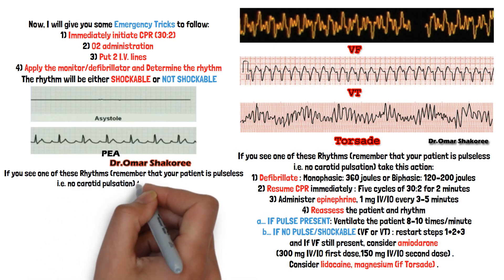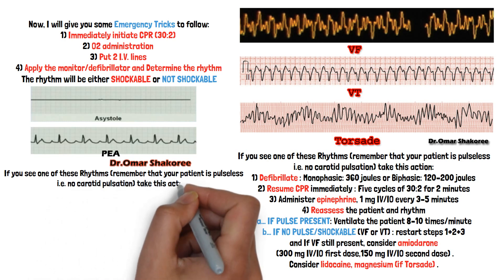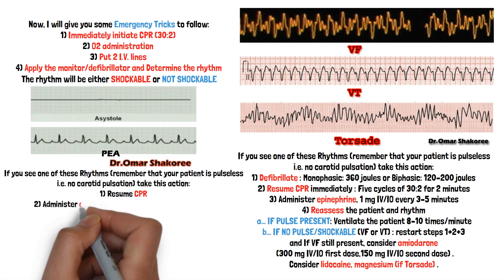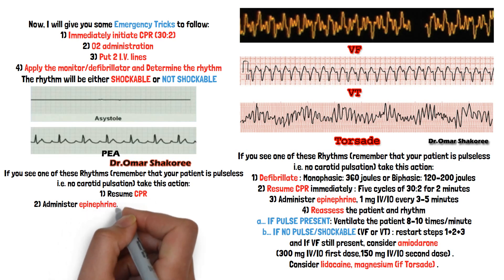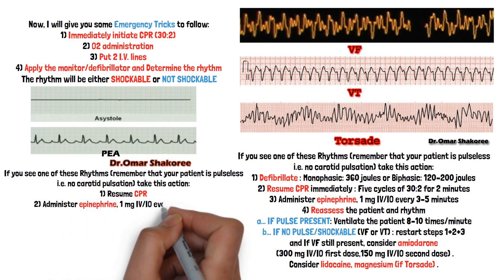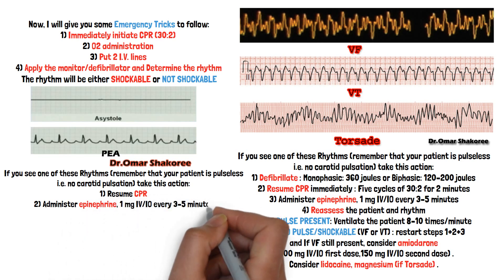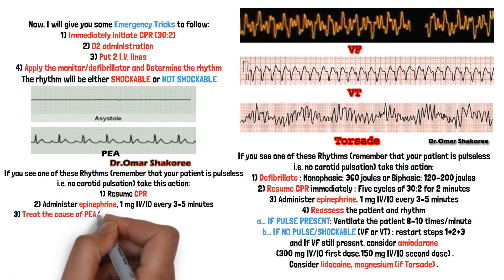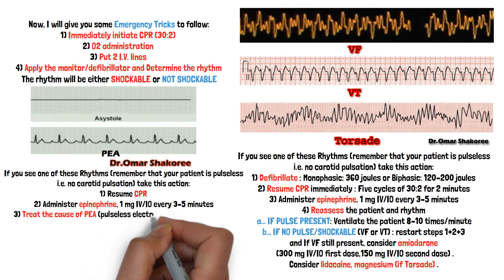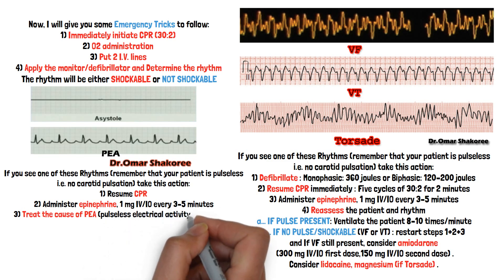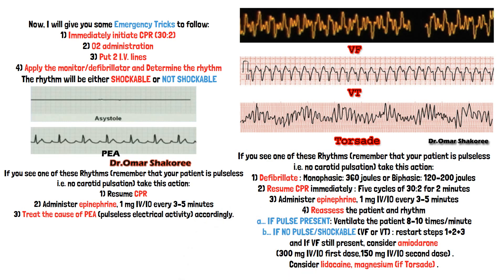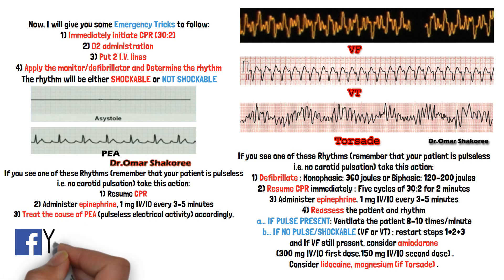Other types of rhythm you may see are asystole or pulseless electrical activity (PEA). If you see this on the monitor screen, what will you do? Just again do CPR, give adrenaline, and try to treat the cause of pulseless electrical activity. This topic — pulseless electrical activity — will be discussed later in another video.